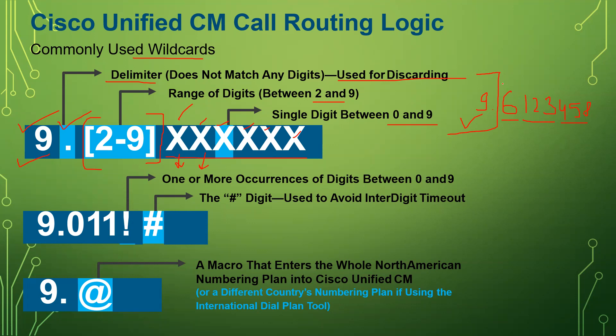Then the number — for example 6, 1, 2, 3, 4, 5, 8 — will get forwarded to the next level, or you can say to the gateway or the service provider.